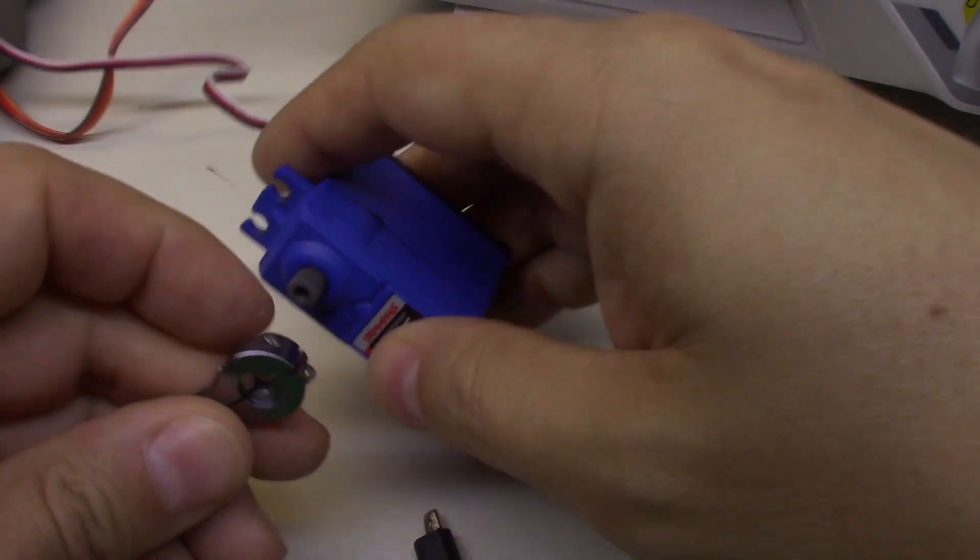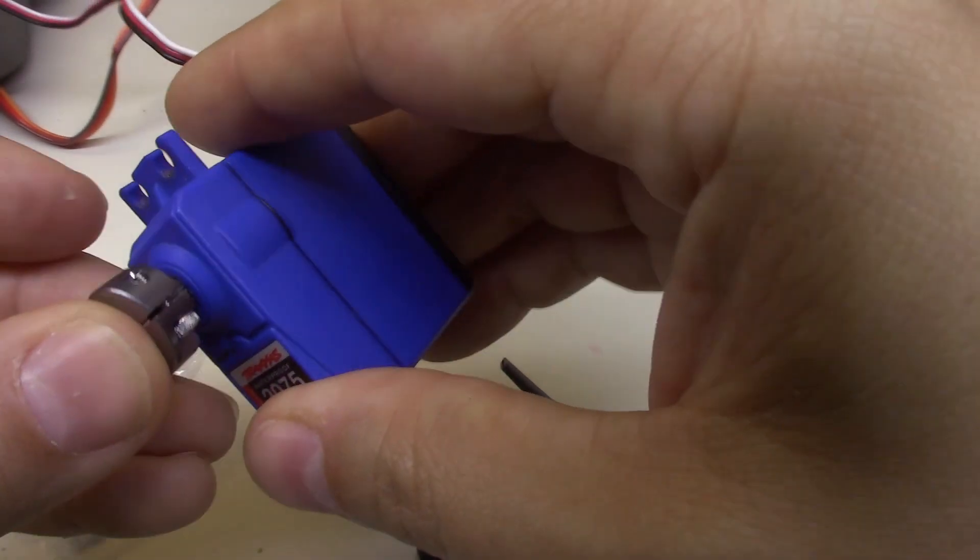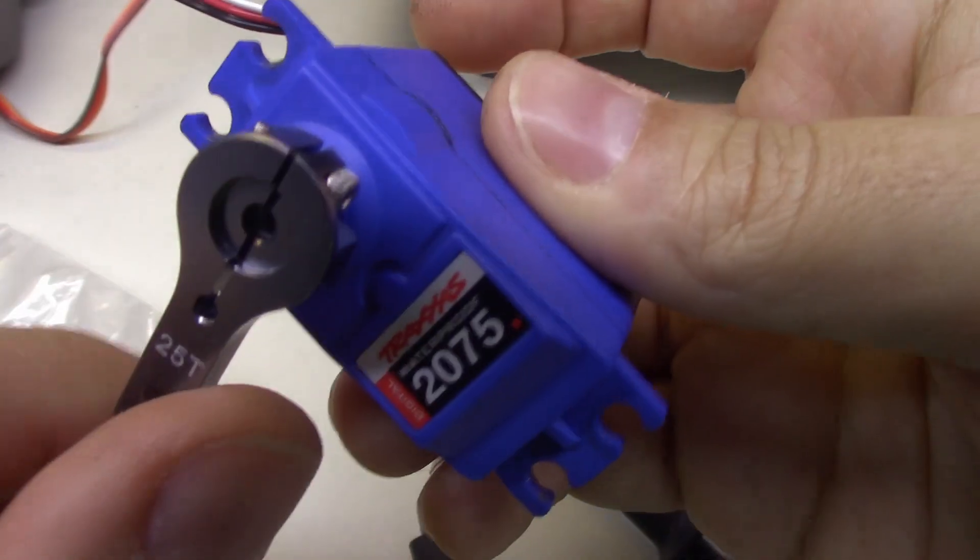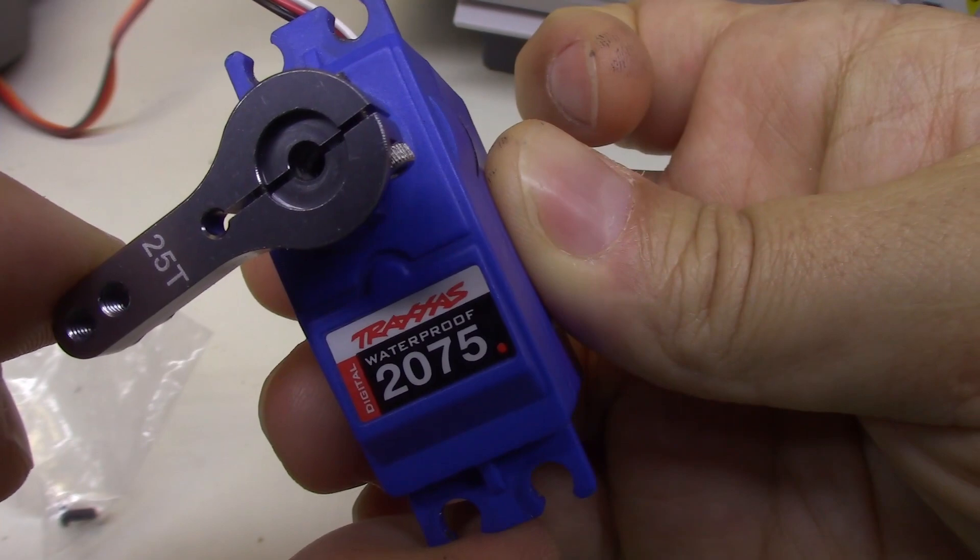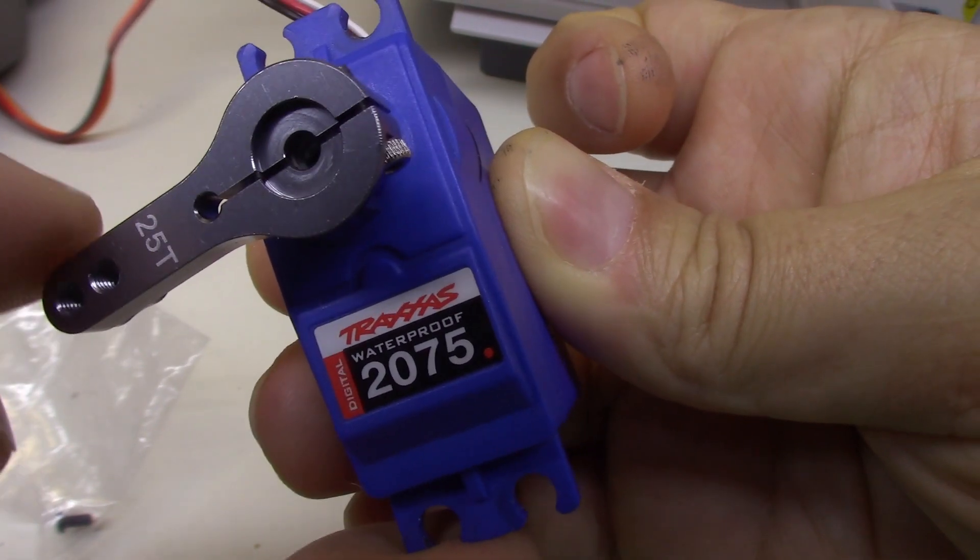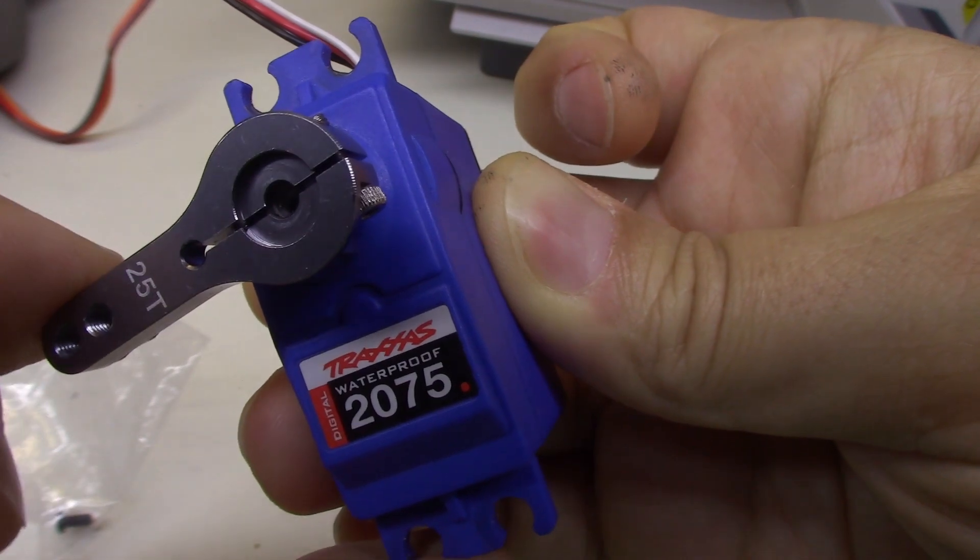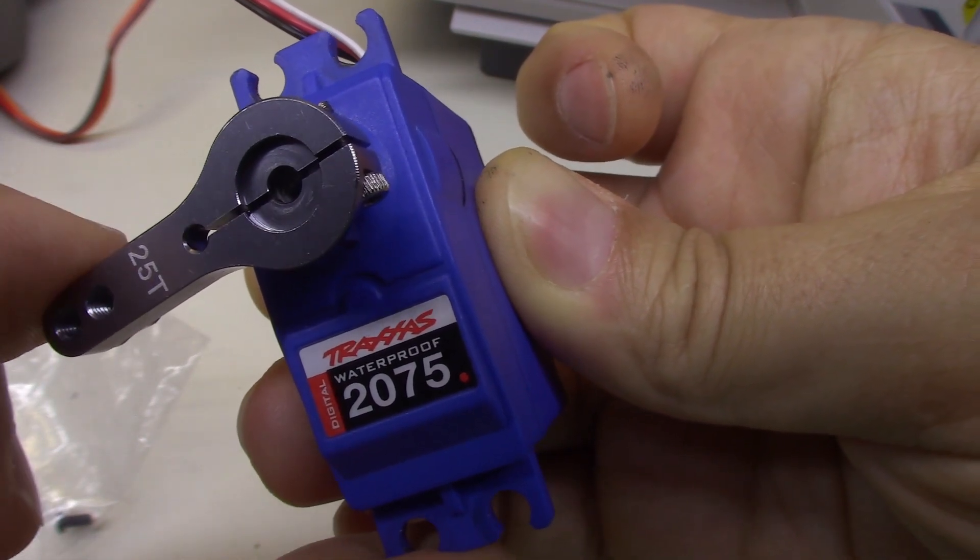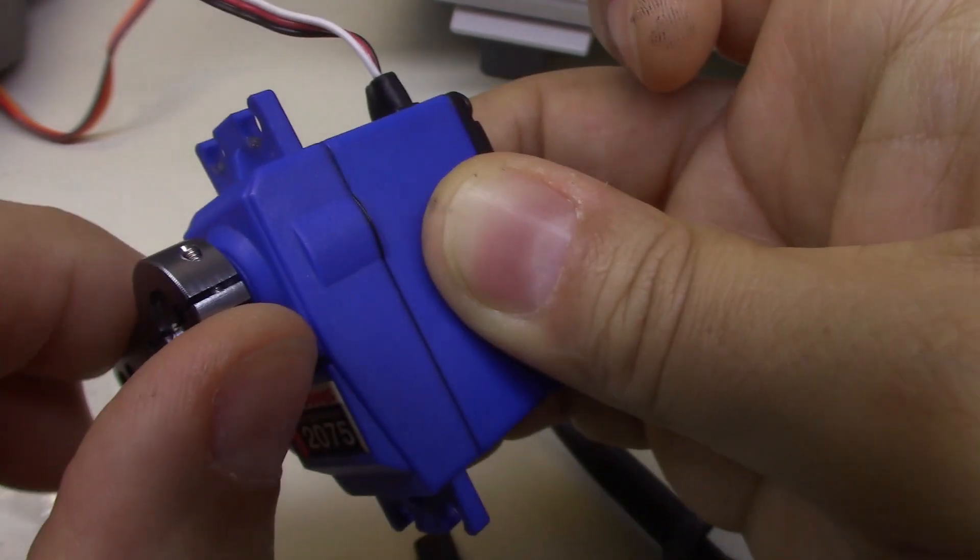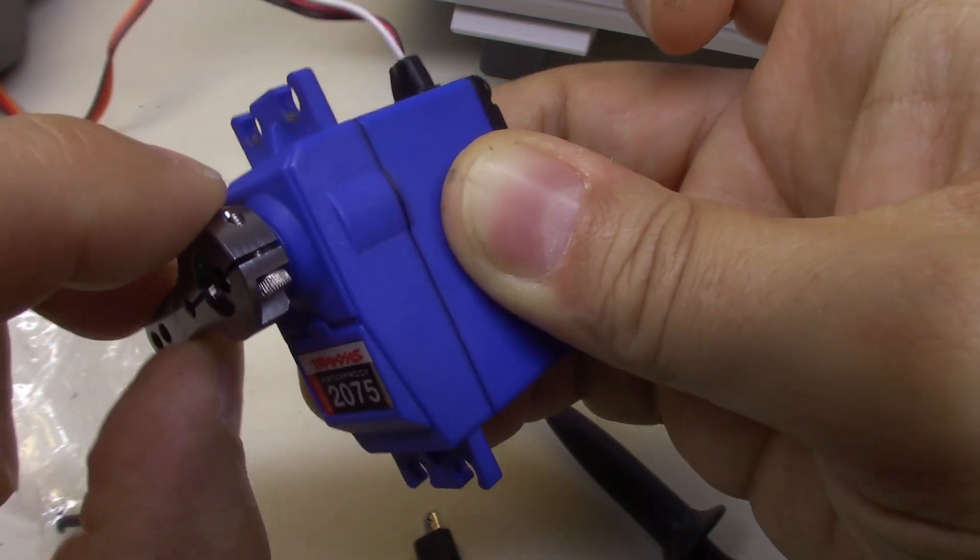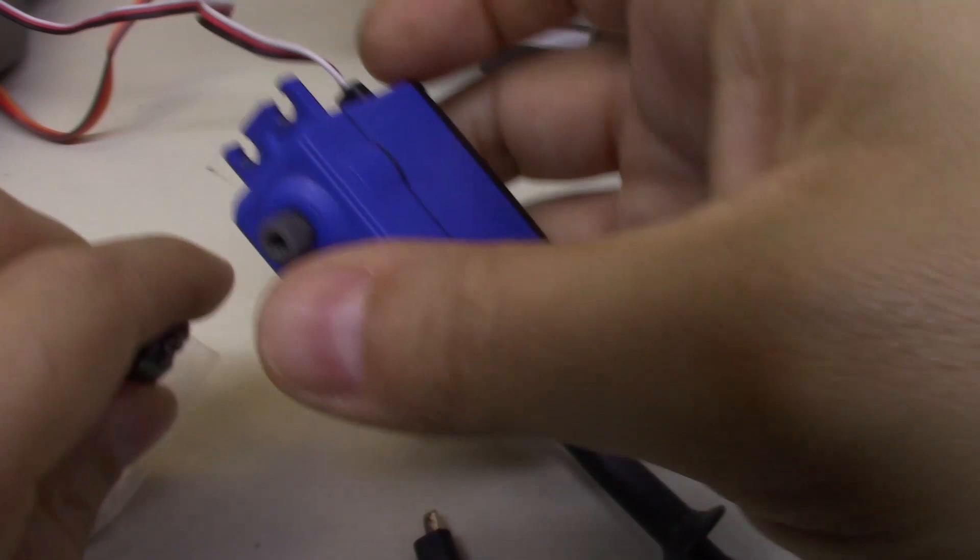I also want to just real quick show you how a digital servo is supposed to behave. So when I push on this, I get immediate resistance on it, and you can hear the pulse width modulation of the motor inside the servo. It's kind of a grumbling, whining noise, and there's almost no dead band in here at all.